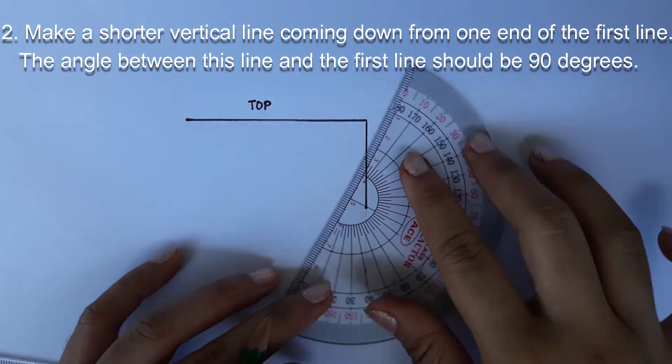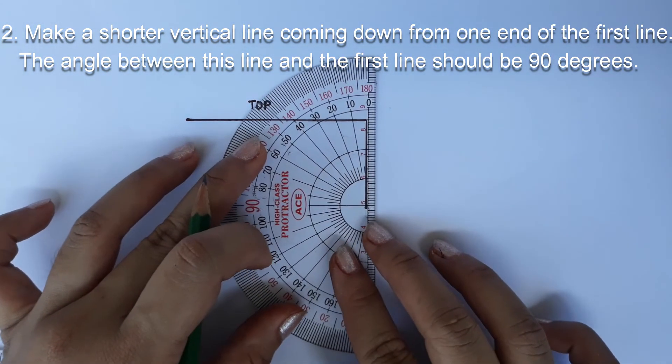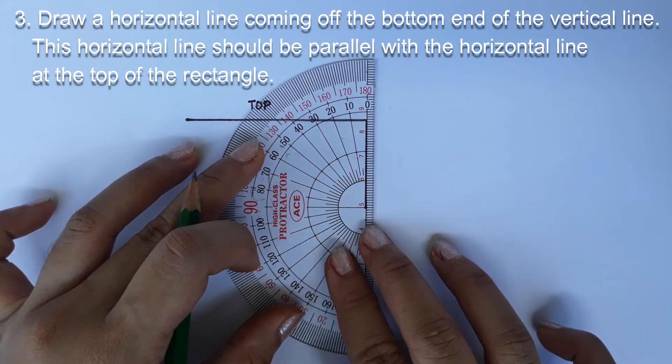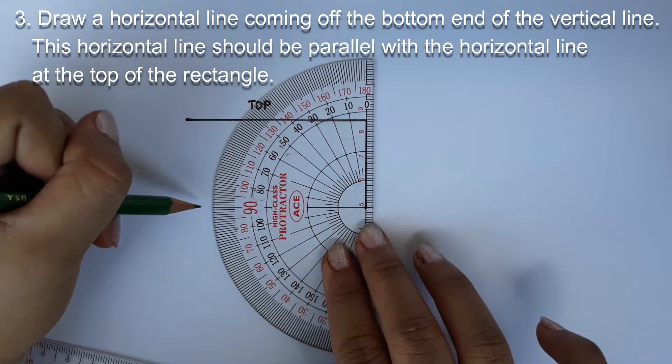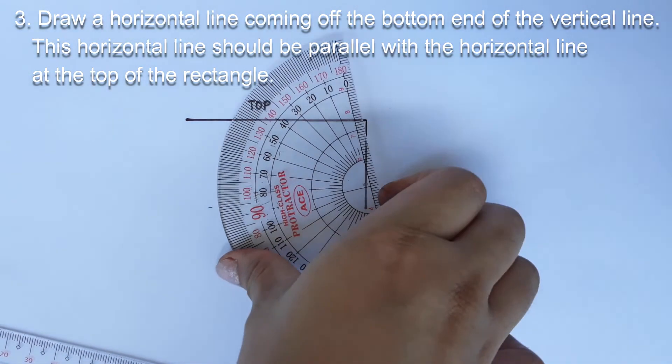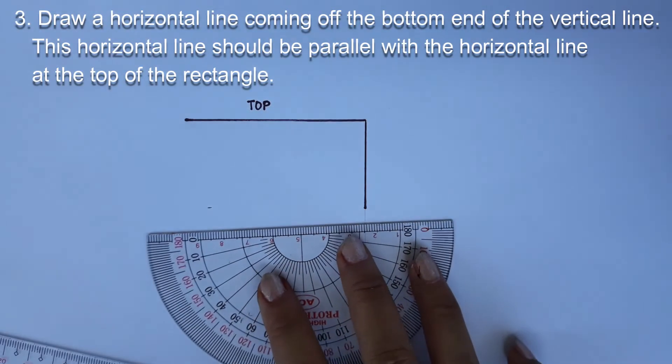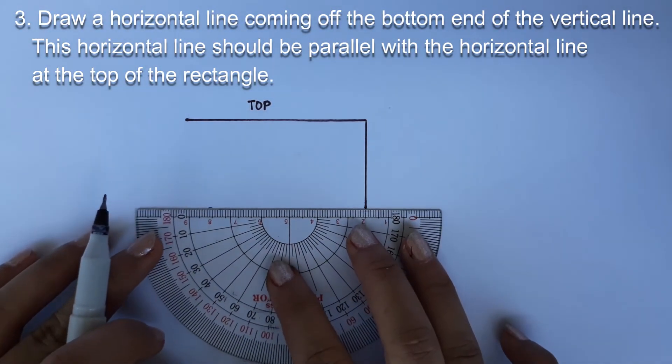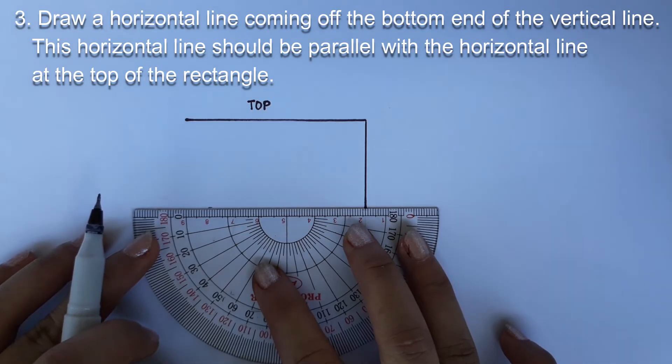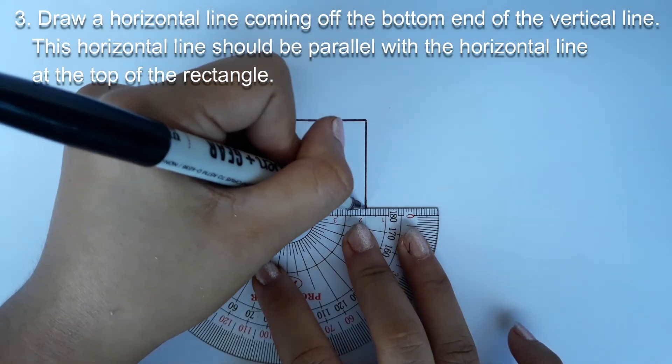You can use a protractor to measure the angle between the vertical and horizontal lines. Number 3. Draw a horizontal line coming off the bottom end of the vertical line. Make sure this line is straight like the first two lines and that it is the same length as the first horizontal line you drew. This will be the bottom of the rectangle.